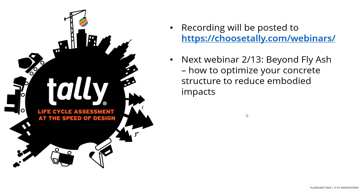There's a question about whether a material might be missed in translation between Tally and EC3. The best source of information for this is going to be that CSV report you can download, which takes you through every single Tally material in your model and how it is interpreted in EC3. There is a column to note whether it is supported and, if so, how it has been mapped into EC3. That will also allow you to compare quantities — if there's any discrepancy between the mass represented in Tally and the volume or area represented in EC3, that's where you'll find that information.